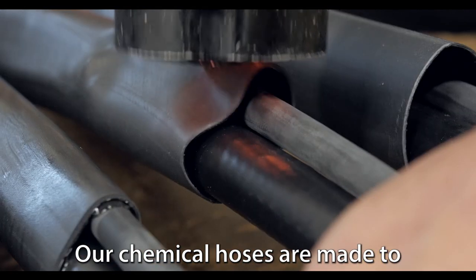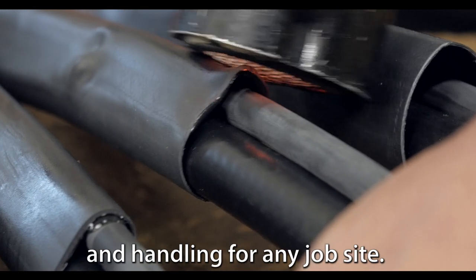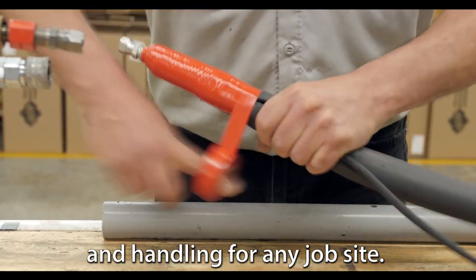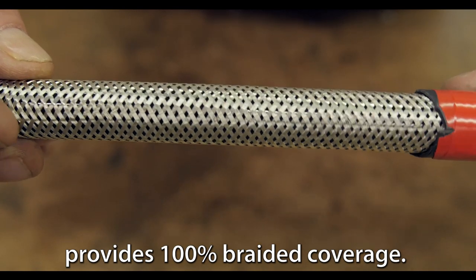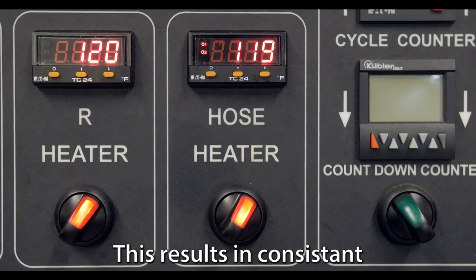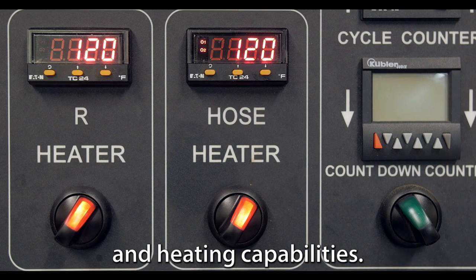Our chemical hoses are made to withstand the intense pressures and handling for any job site. Our unique heated hose system provides 100% braided coverage. This results in consistent and quick initial heat up and heating capabilities.